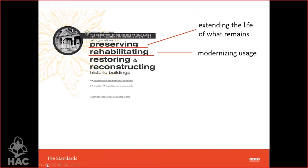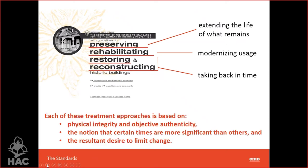Rehabilitation is about modernizing usage — taking buildings designed for one purpose and making them serve another, and giving guidance on how to introduce new mechanical and building systems into historic structures. Restoration and reconstruction are about taking buildings back to a very specific moment in time, treating buildings like museum pieces — which has a place but is generally not what most communities are interested in. Each of these approaches is based on physical integrity, objective authenticity, the notion that certain times are more significant than others, and a desire to limit change — all of which is very challenging in a rural environment.